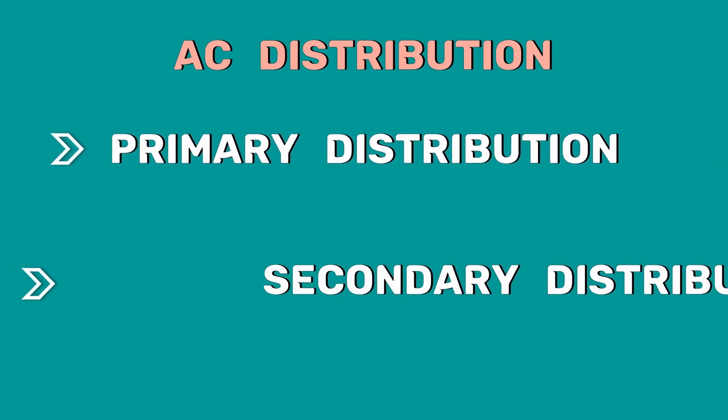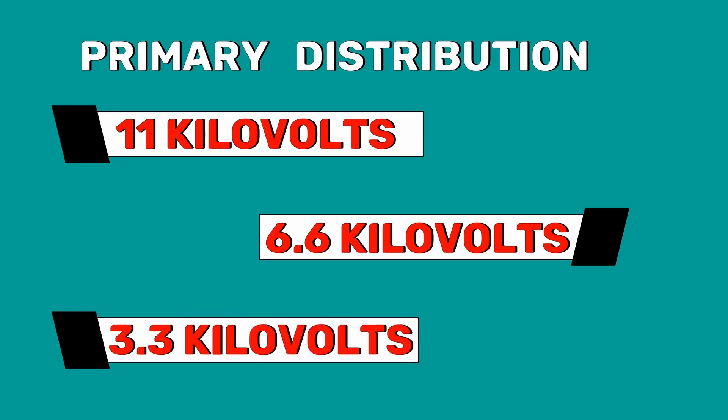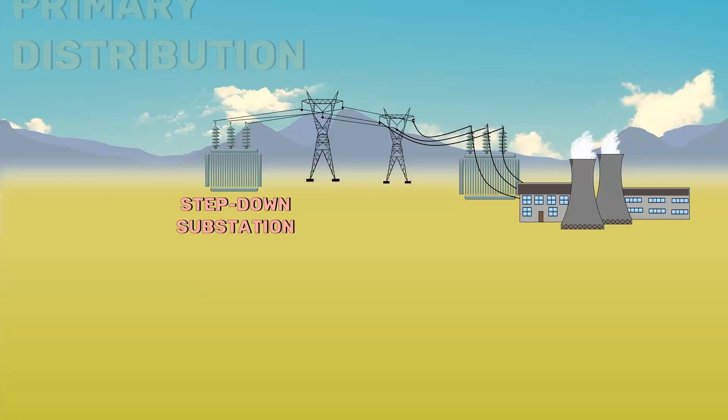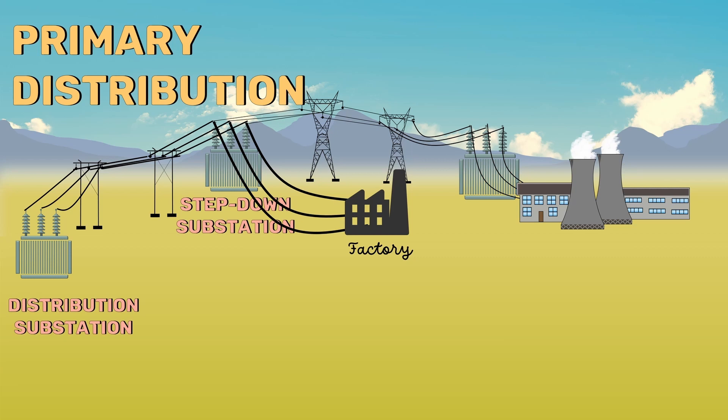The AC distribution system is classified into primary distribution system and secondary distribution system. The primary distribution system is the part of the AC distribution system which operates at voltages somewhat higher than the general utilization voltage. The most commonly used voltages are 11 kV, 6.6 kV, and 3.3 kV. Due to economic consideration, the primary distribution system is carried out by a three-phase, three-wire system. Primary distribution handles large consumers such as factories and industries, and also feeds small substations where secondary distribution is carried out.